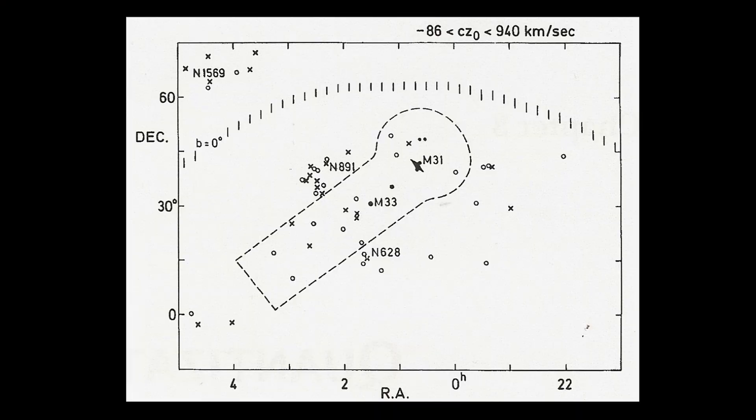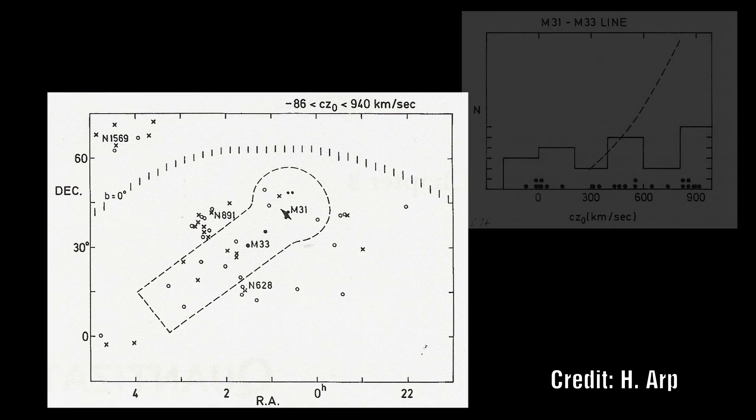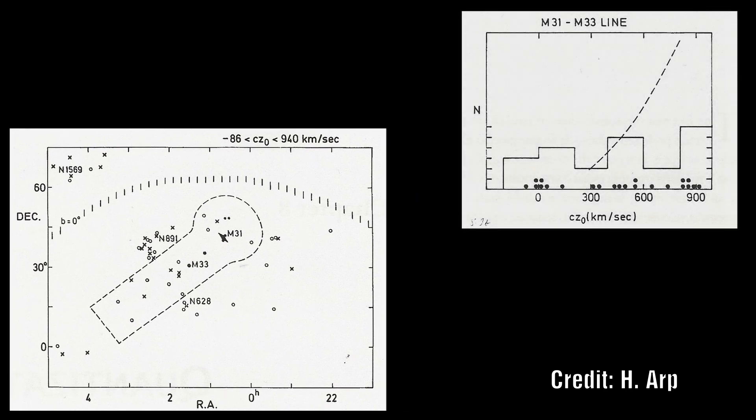If we examine our local group we know that there are a number of smaller galaxies and hydrogen clouds that are distributed along the minor axis of M31, implying that the central galaxy in our local group is ejecting or has ejected material in this direction. Here we see the galaxies up to a redshift of 940 kilometers per second, which seem to belong to this line and are therefore younger members of the local group.